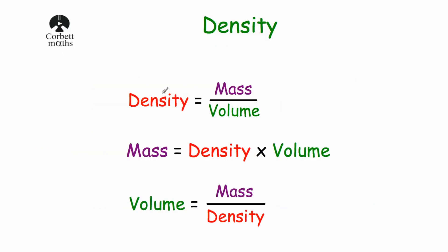To work out the density of an object, we do the mass divided by its volume. So if we have an object and we do its mass divided by its volume, it will give you the density of the material. Now if you rearrange this formula — if you multiply both sides by volume — you would get density times volume is equal to mass. So mass is equal to density times volume.